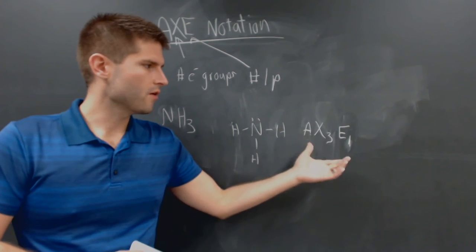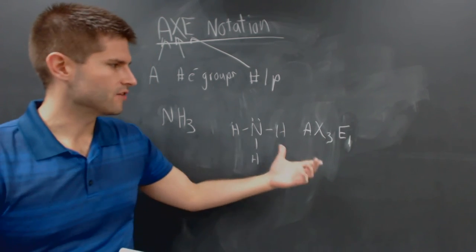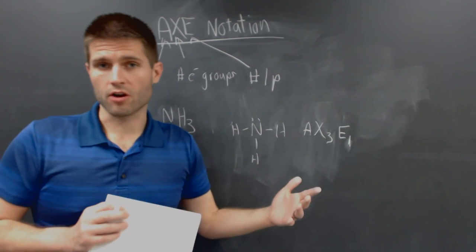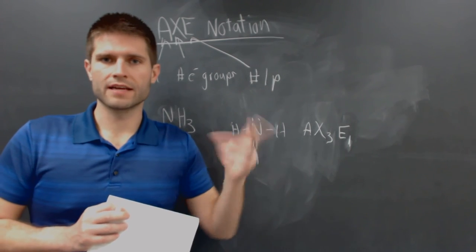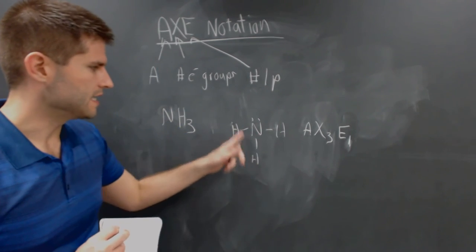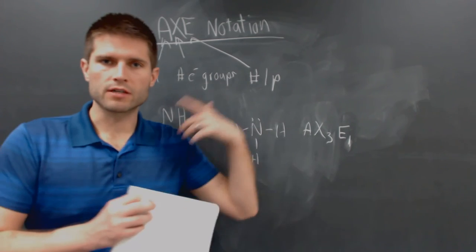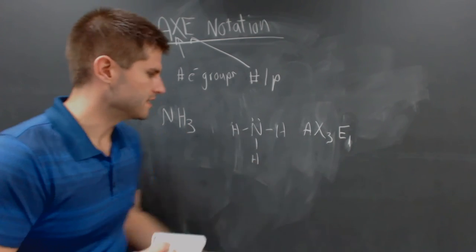Now, once we know how to correctly identify the AXE notation, we can then, we have a giant chart that tells us what the bond angles are going to be between each of these groups. So that's why we're doing this. That's why we're learning this AXE notation.